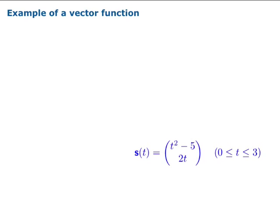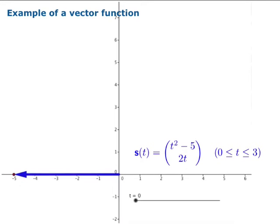Let's look at an example. Suppose we have s(t) equals (t² - 5, 2t), where t runs from 0 to 3. Let's get an animation of this. We start at time 0, and when you plug 0 into your formula, you get (-5, 0).